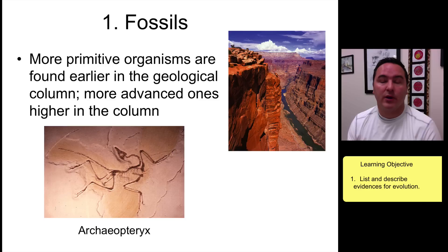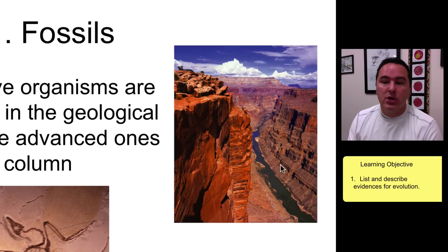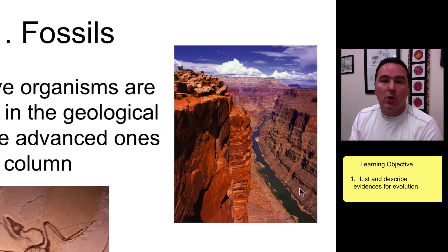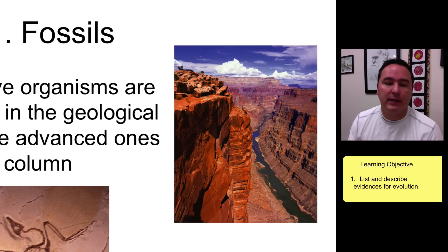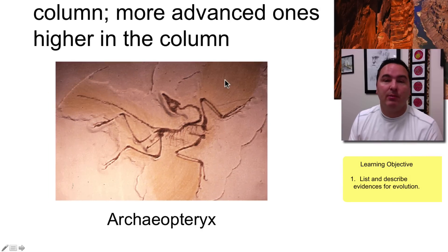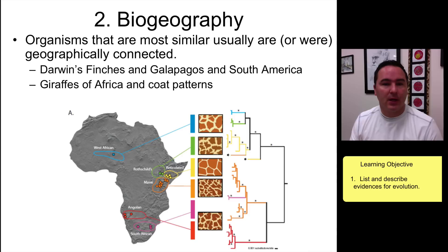Not all organisms fossilize, but those that do we have a very rich fossil record for. You can go to an area of the world and find the more ancient fossils lower in the rock layers and the more recent fossils in the top layers. As you do this you can see transitionary forms in many lineages. One classic example is the transitionary forms from dinosaurs to birds, seen in fossils like Archaeopteryx and many others.